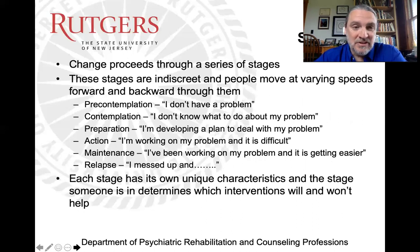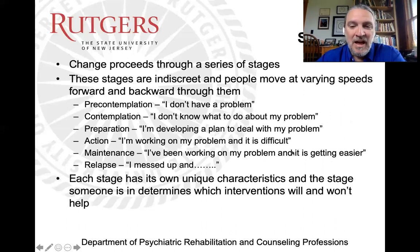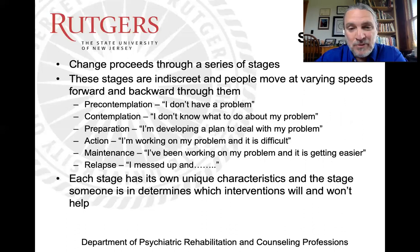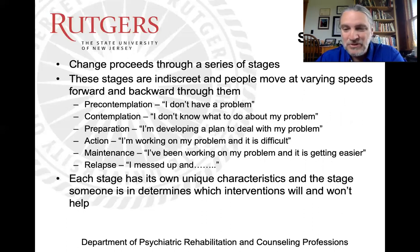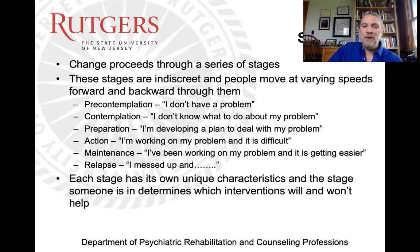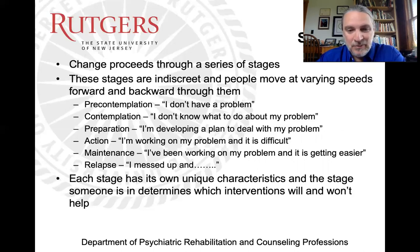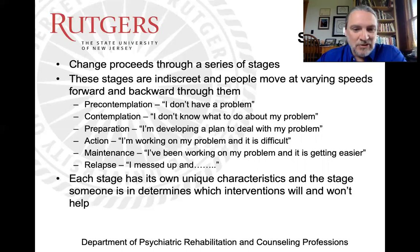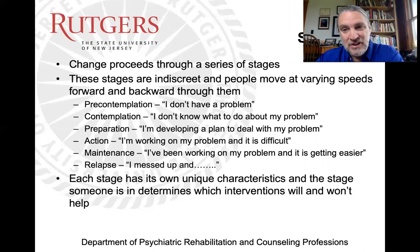To summarize: change goes through a series of stages; it's not a neat, clean, easy process. These stages have blur — you can be between them for the same issue, and people move backward and forward through them. Pre-contemplation: I don't have a problem. Contemplation: I don't know what to do about my problem. Preparation: I'm developing a plan. Action: I'm working on it and it is difficult. Maintenance: I've been working on it and it's getting easier. Relapse: I messed up and... Each stage has its own unique characteristics, and assessing the stage someone is in helps you design an intervention appropriate to move them forward.